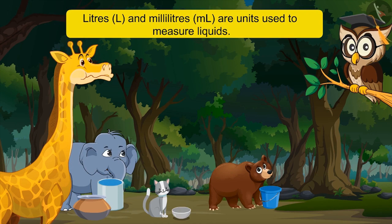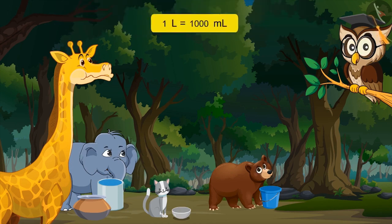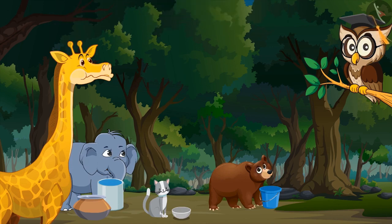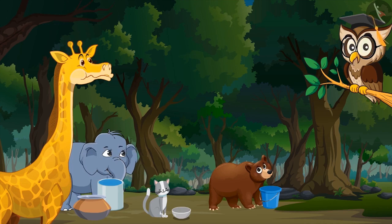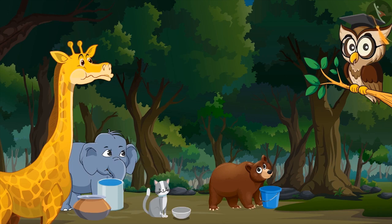Liters and milliliters are units used to measure liquids. There are one thousand milliliters in a liter. Thousand milliliters? Yes. I drank one thousand milliliters of water. You have drunk more than five liters of water, nearly about five liters. Did I also drink more than a liter of water? No, Cat Queen. You have drunk even less than half a liter of water. Let me explain this to you in some detail.